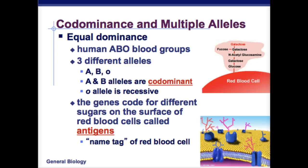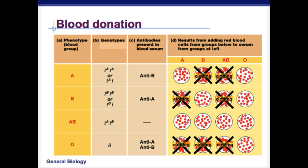A and B are representative of proteins or antigens that are on the surface of the red blood cells. Looking at the genotypes and phenotypes for human blood types: for blood type A, they'd either have I superscript A superscript A, or I superscript A little i. For B, they'd have I superscript B I superscript B, or I superscript B little i. For AB, they have I superscript A and I superscript B. For someone with O, they have little i little i.